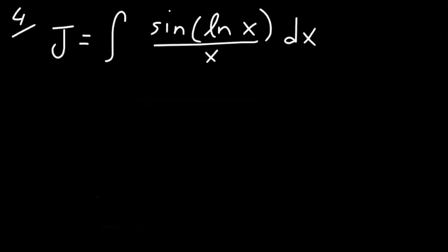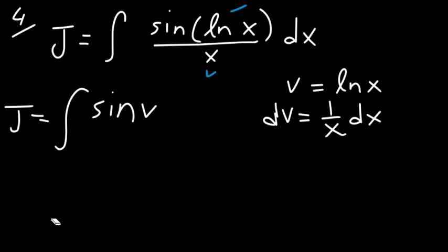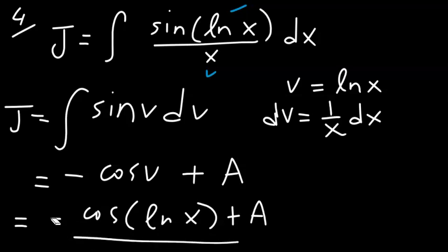Let's do the following integral. Whenever you see natural log of x together with 1 over x, a useful substitution is to set v equal to natural log of x, so the differential of v is 1 over x dx. Rewriting the integral in terms of v gives the integral of sin(v) dv, which equals minus cos(v) plus a constant A. Substituting back, the answer is minus cos(ln(x)) plus A.